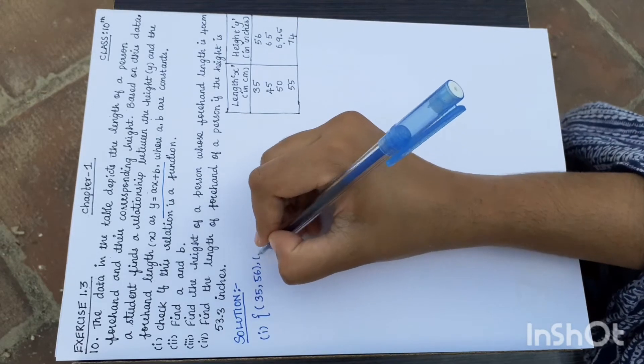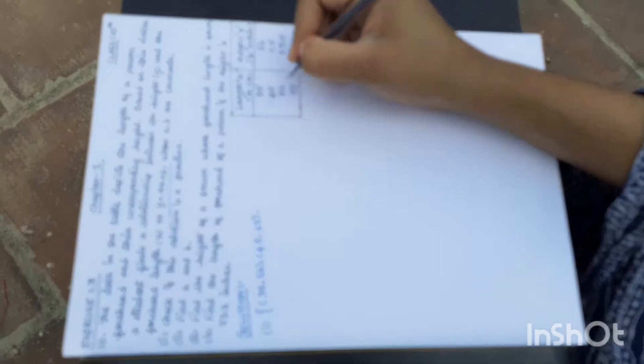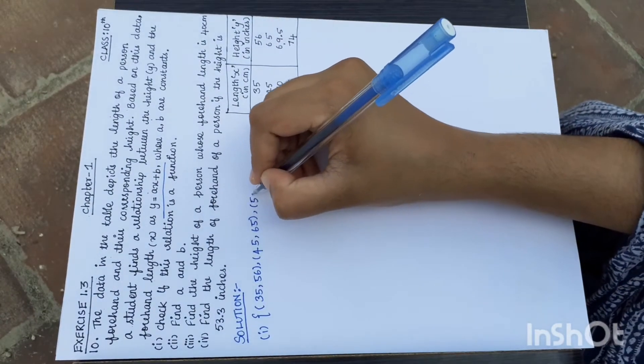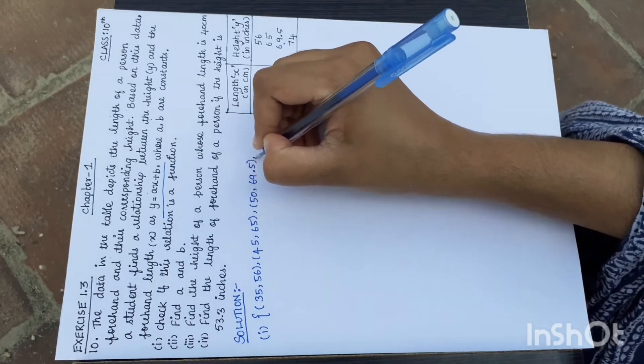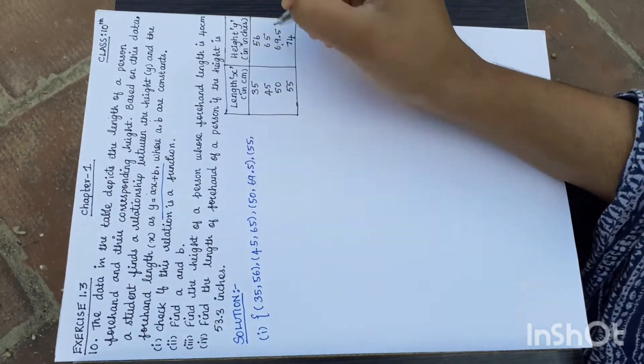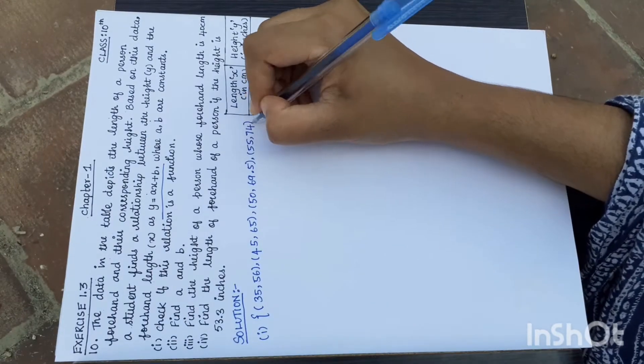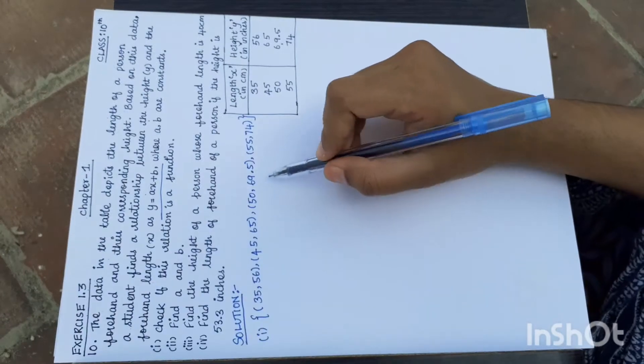Second values are 45, 65. Third value is 50, 69.5. Fourth value is 55, 74. This is the actual table.